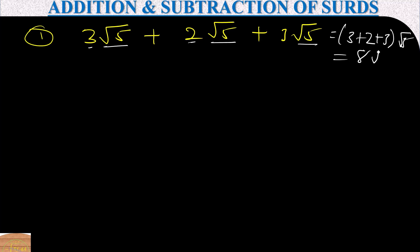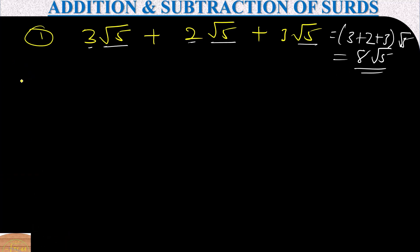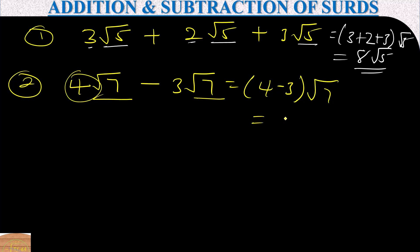Example two: 4√7 minus 3√7. We have √7 in both terms so we can subtract. Four minus three equals one, so the answer is 1√7, which is just √7.